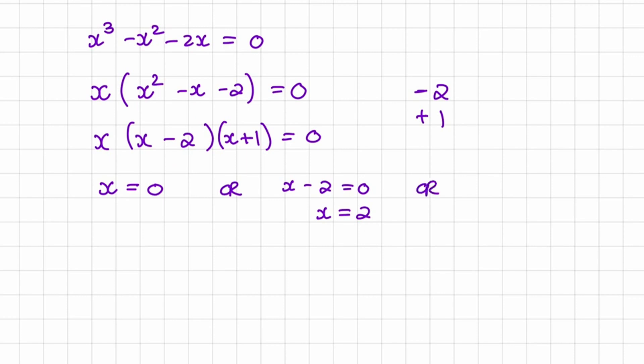Or we'll have the third solution of having the second bracket of x plus 1 equals to 0. Therefore, x is equal to negative 1.